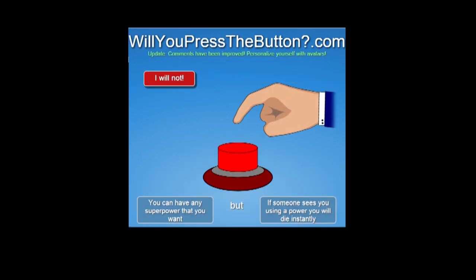You can have any superpower that you want, but if someone sees you using a superpower, you will die instantly. Interesting. This is easy. Yes. Because my superpower will be invisibility. What if someone sees you turn invisible? Turning invisible or turning back from invisible. Then you're busted, but it's a good one to have. That's the easy one to not get busted with.